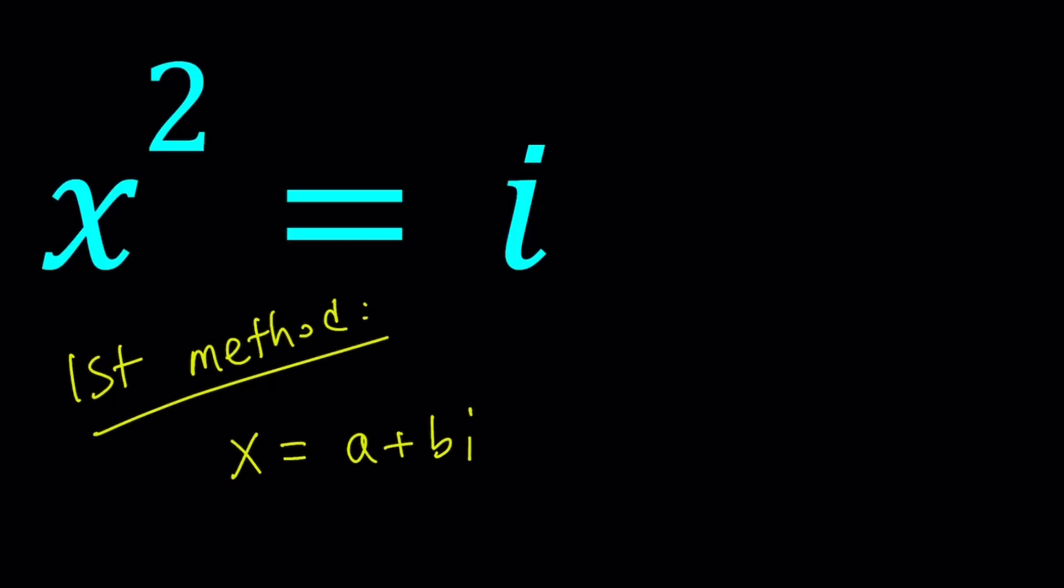Where a and b are real numbers, a plus bi represents a complex number. And notice that if b is zero, we end up with a real number, which is also a complex number.